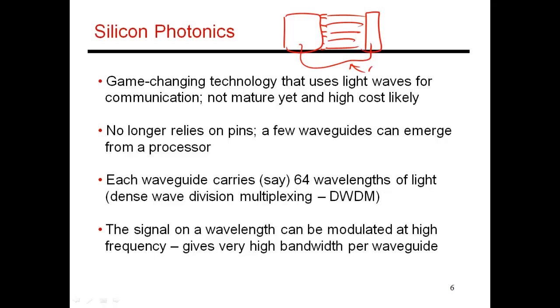So one of these silicon waveguides can carry about 64 different wavelengths. So you're having 64 bits of data transmission on a single waveguide. So you can also have multiple waveguides coming out of a processor, and that gives you a much higher data bandwidth.